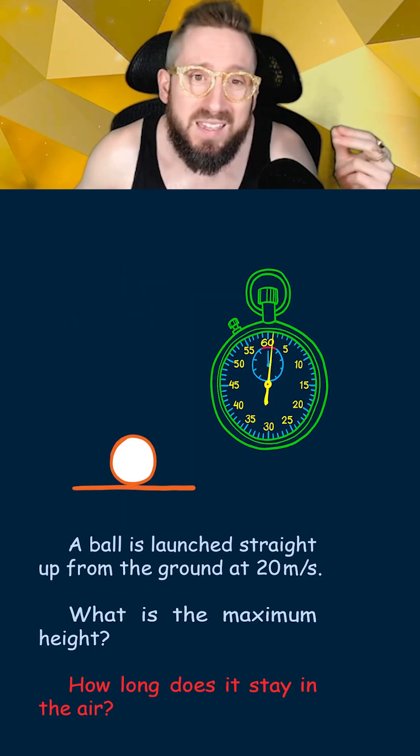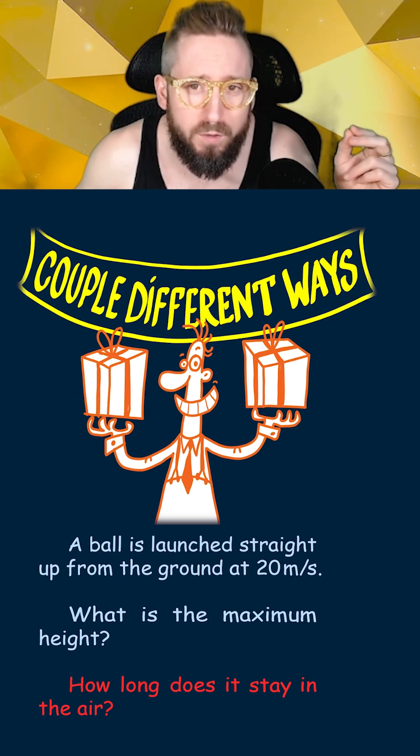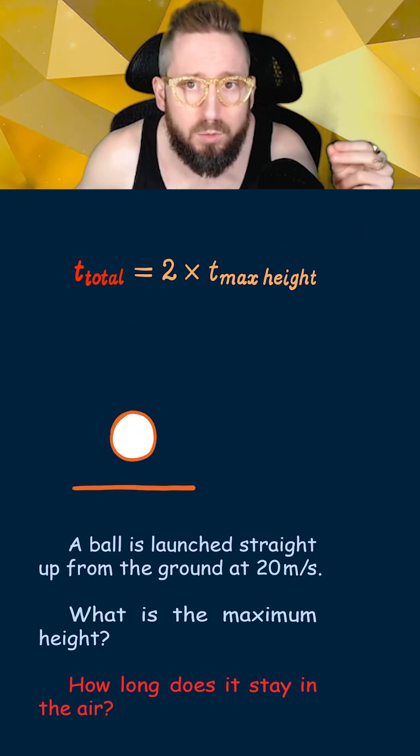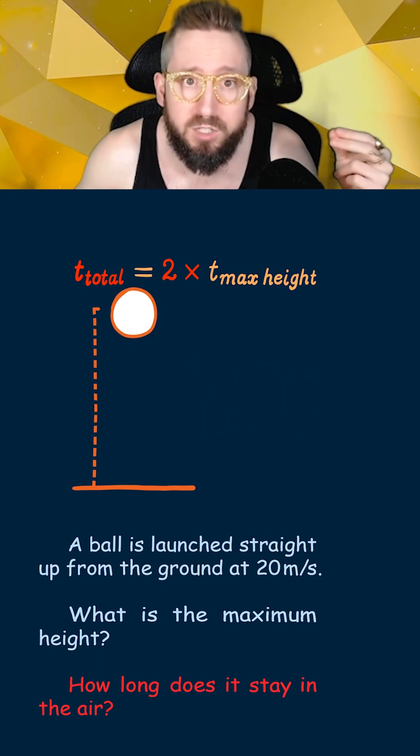Now let's try to find the total time that the ball stays in the air. Technically there are a couple different ways you can solve this, but we're going to use a quick trick where the total time an object stays in the air is equal to twice the amount of time it takes for the object to reach its maximum height.